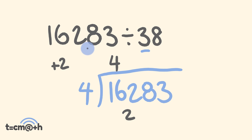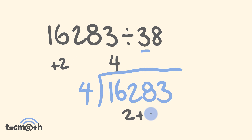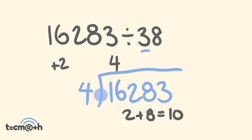What we're going to do is multiply the last part of our answer — this four — with this difference. Four times two is equal to eight, and we're going to add that on. So two plus eight is equal to 10. We're going to go 10 divided by four, and that's going to be equal to two with a two remainder, because two times four is equal to eight.